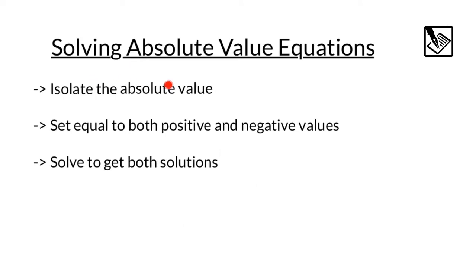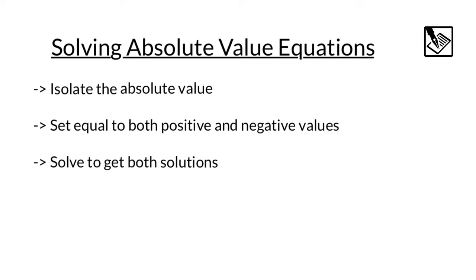For solving absolute value equations, we want to isolate the absolute value first, just like you would normally isolate a variable. Then set equal to both the positive and negative values, since it's distance from zero it could be either positive or negative. Then solve to get both of your solutions.